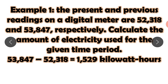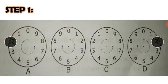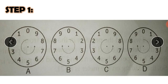Now let's look at how to read an electric meter. The first step is to stand directly in front of it and look at the four dials labeled A, B, C, and D. Note that the pointers in adjacent dials move in opposite directions.